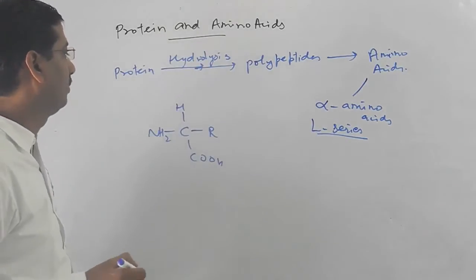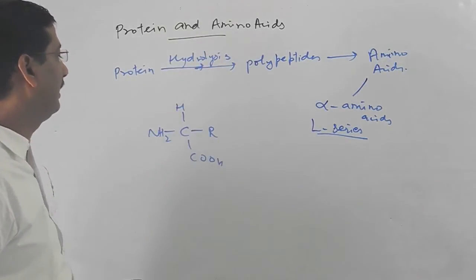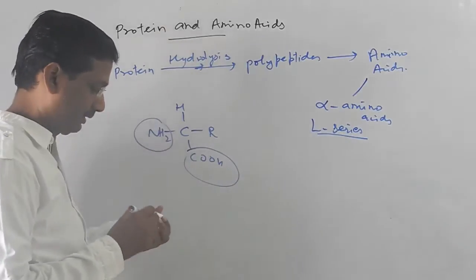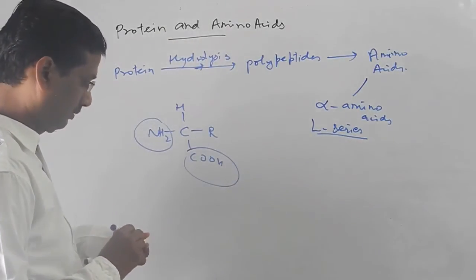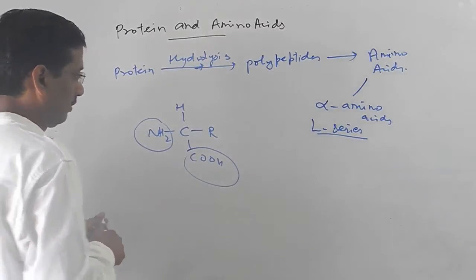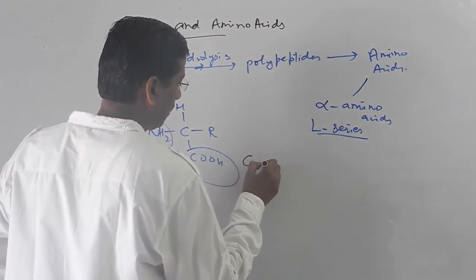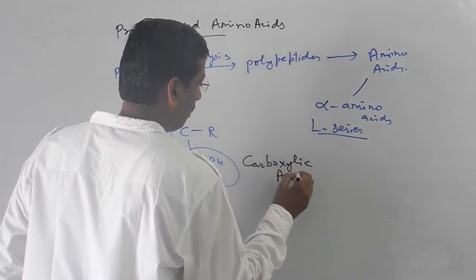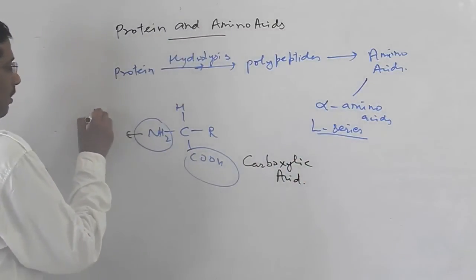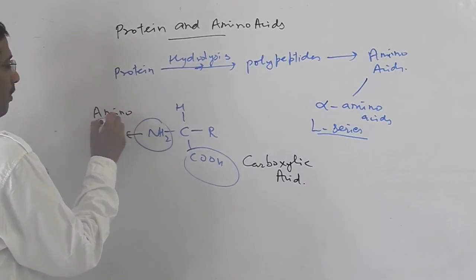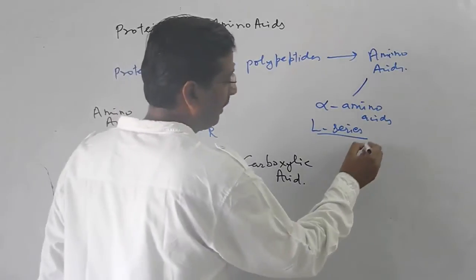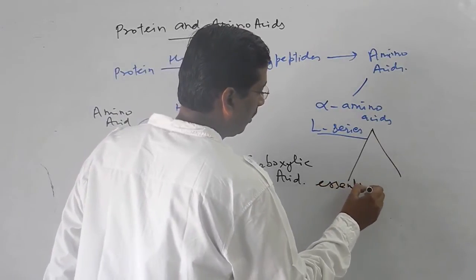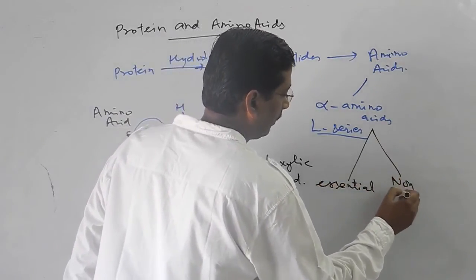Amino acids can be classified as essential and non-essential. In this case, you will have a carboxylic group in an amino acid.